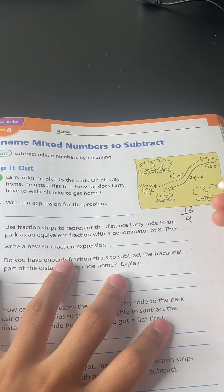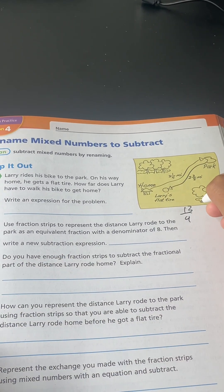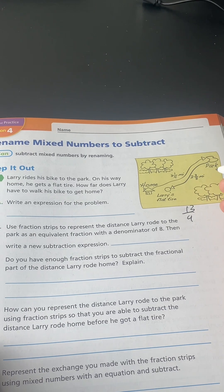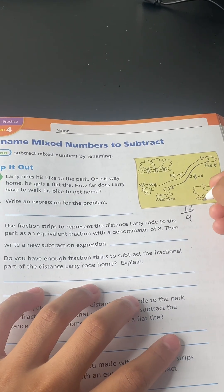13 over 4 minus 8 times 2 equals 16. 16 plus 3 equals 19.